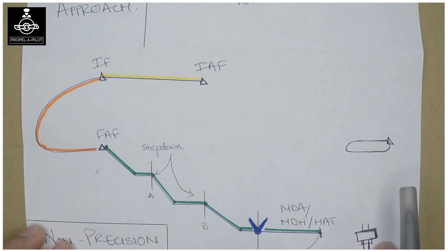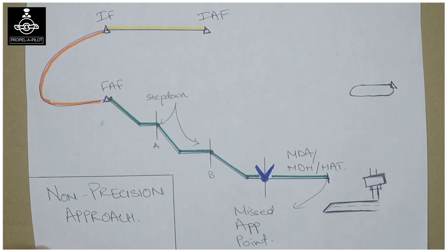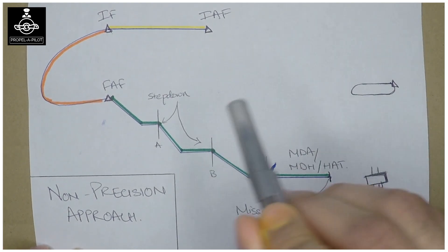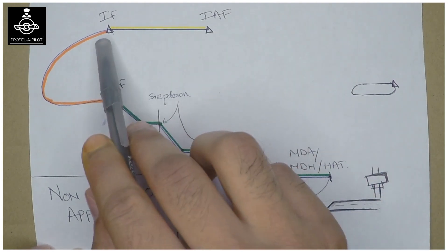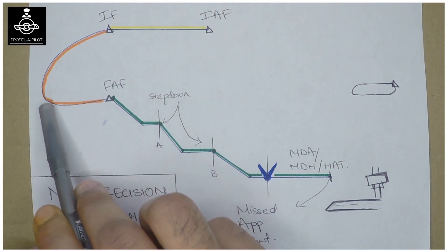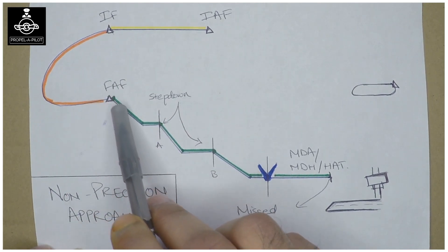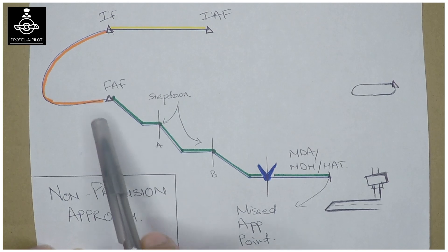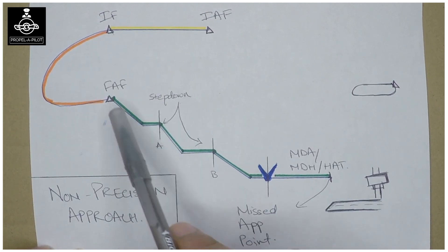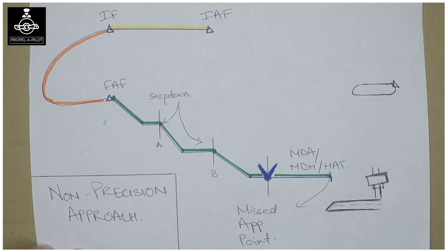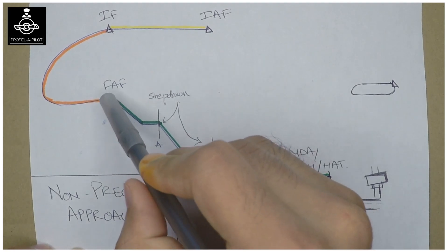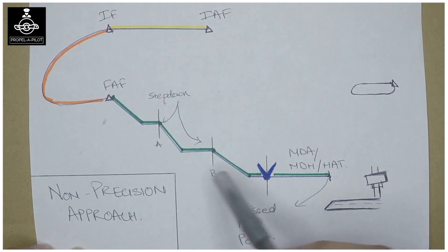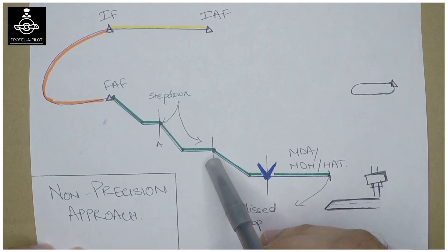Let's see what's the difference between a precision and a non-precision approach. In a non-precision approach, you still have a feeder route, a transition, or a STAR that brings you to the initial approach fix, then you go to the intermediate fix, then to the final approach fix, and then the final approach segment. Here, instead of a glide slope or a descent path, you see that it's a step-down manner of descent. A non-precision approach has step-down descent, so you do not descend like a glide slope.